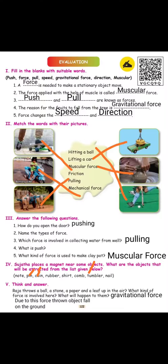Raja throws a ball — stone, paper, leaf, all the time. What kind of force is involved? If a person is involved and they are throwing a ball, we can say gravitational force acts on it. Due to this force, a thrown object will fall on the ground.